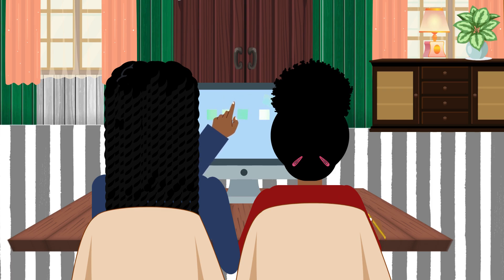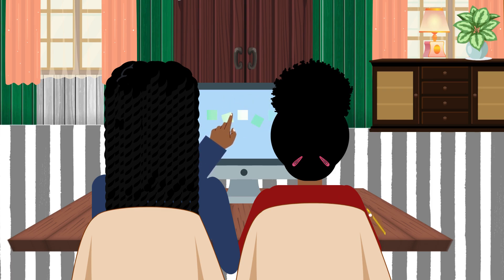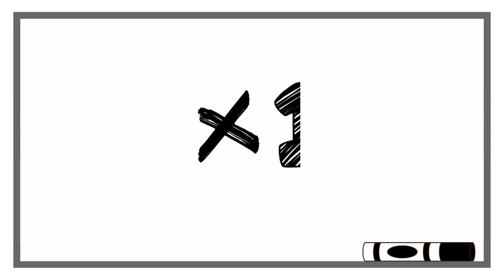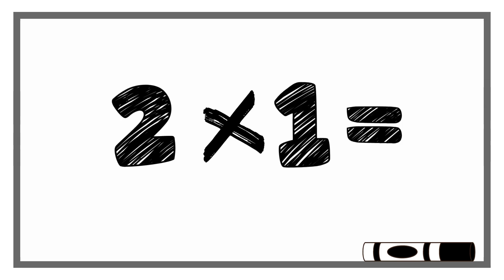When it comes to multiplication, I look at the problem. Here, we have 2 times 1. That's like saying 2, 1 time. 2 one time is 2. So 2 times 1 equals 2.